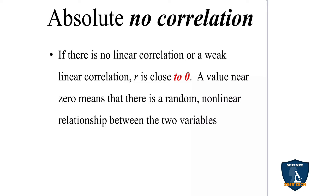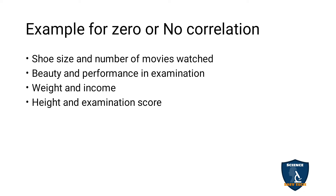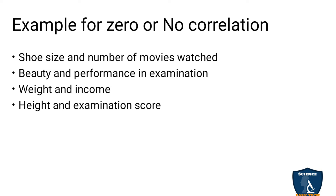Moving on to no correlation: some variables have no correlation, such as beauty and performance in examination. Shoe size and number of movies watched — you cannot say people with larger shoe size watch more movies. Weight and income do not have any correlation. Height and examination score — you cannot say tall people will always perform well in exams. So these are examples of zero correlation or no correlation.